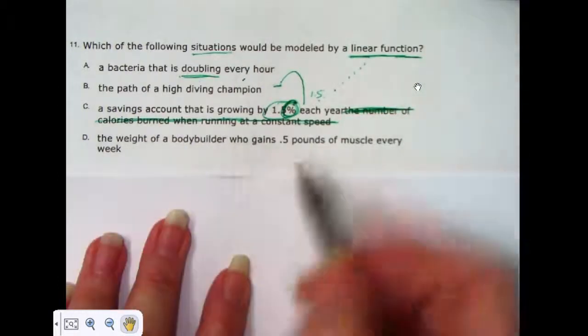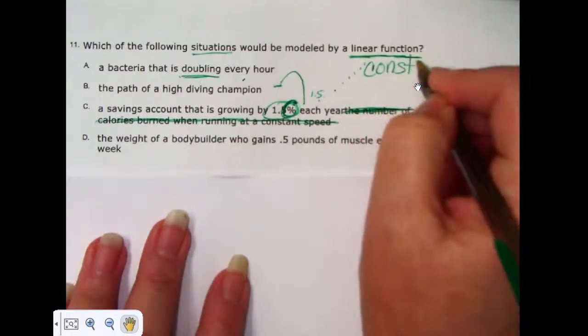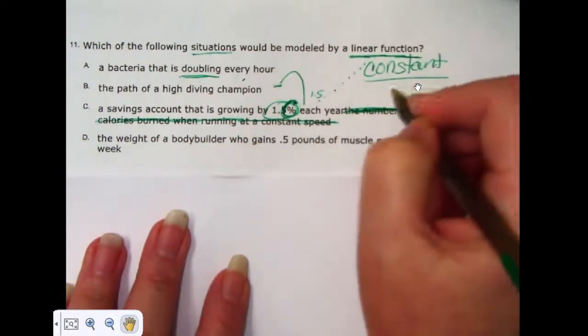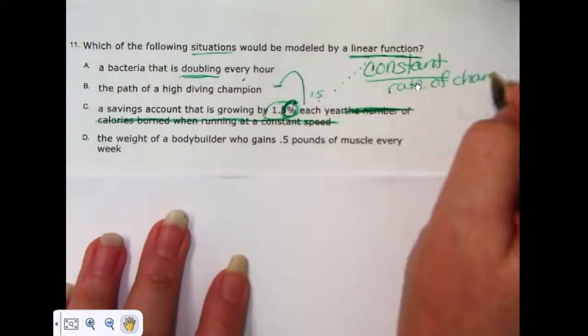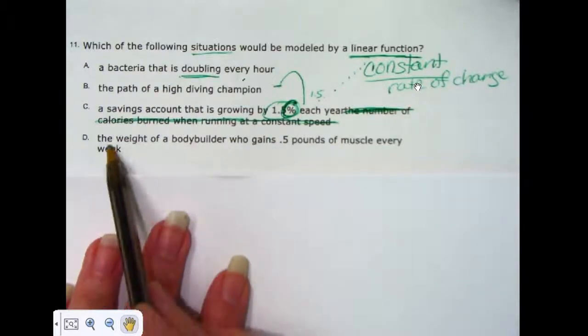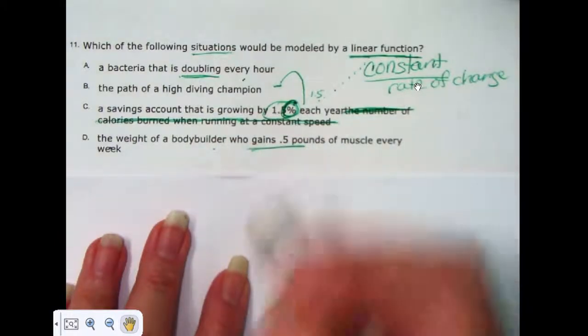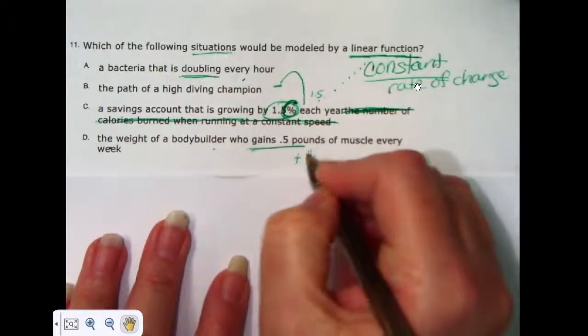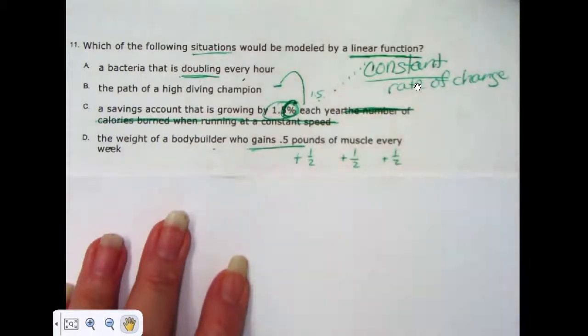But letter D, we look for, when we're looking for a linear function, a constant rate of change. A constant rate of change that it's always going to be exactly the same amount that we're adding or subtracting. In this one, we have the weight of a bodybuilder who gains a half a pound every week. That is constant. You're adding 1/2, adding 1/2, adding 1/2 every single week.